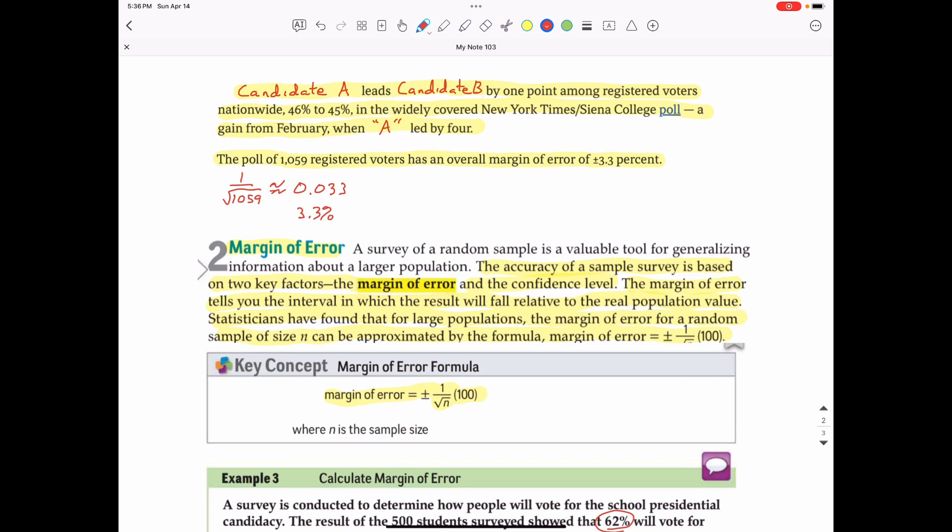So let's go ahead and find the intervals in which candidate A and candidate B will most likely have in the actual election. With candidate A, who is leading with 46 percent, candidate A could possibly get 3.3 percent higher than that to earn as much as 49.3 percent. Or candidate A could have 3.3 percent subtracted from that 46 percent, which would be 42.7 percent.